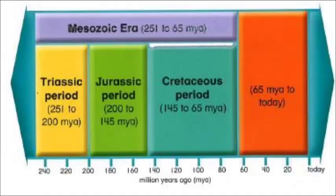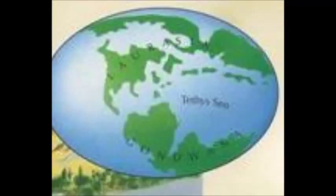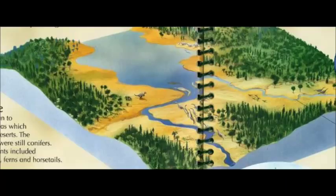The Jurassic Period came next and it was the time of the biggest dinosaurs. Pangea separated into two large areas of land called Gondwana and Laurasia. The weather became cooler than the Triassic Period and there were long rainy seasons. There were more trees growing in large forests and there were huge swamps.